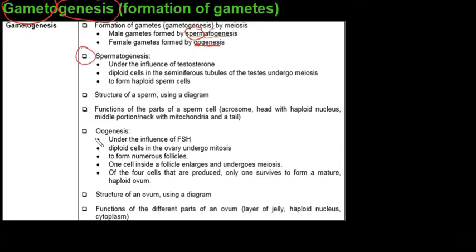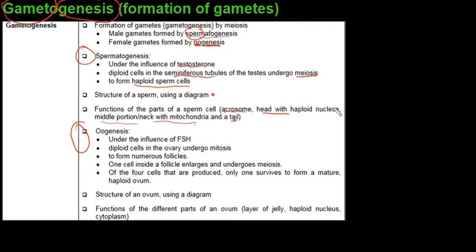The exam guidelines give a brief outline of both processes. Spermatogenesis occurs under the influence of testosterone, when diploid cells of the seminiferous tubules of the testes undergo meiosis and form haploid sperm cells. You need to be able to draw and label a sperm cell, specifically the acrosome, the head with the nucleus, the midsection with mitochondria, and the tail.